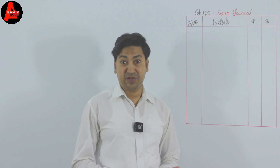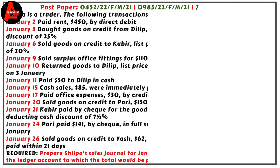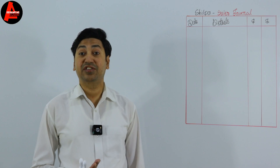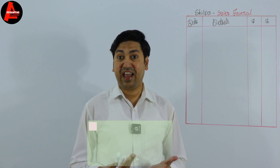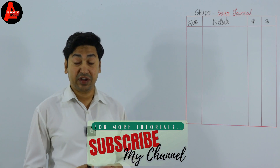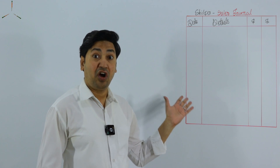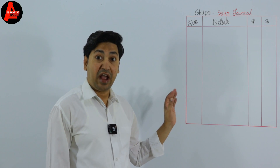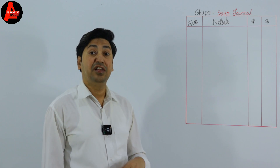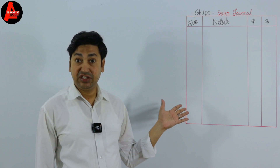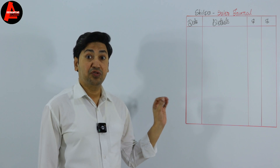Other sales-related transactions are given but are not relevant. For example, January 9: sold surplus office fittings for $110, paid by credit transfer. Office fittings are an asset, so this is an asset sale — this transaction is not related to the sales book. The sales book records only goods sold on credit. Many students record asset-related transactions in the sales journal, but only goods sold on credit belong here.